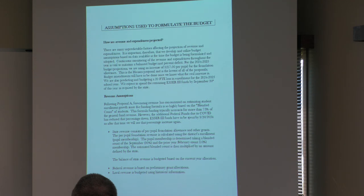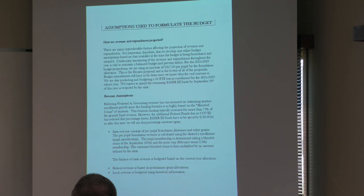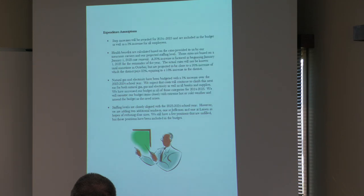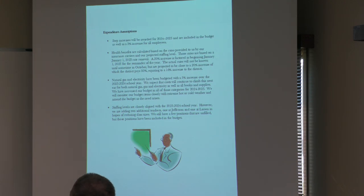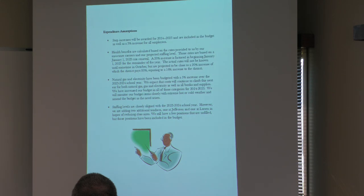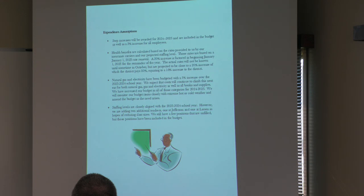Federal revenues in the projection budget are basically the estimates they have provided for all the federal title grants; I'm using their estimates and will increase those with actuals when I do a budget amendment. The local revenue is budgeted based on historical information as well as the taxable values received from the county. For expenditure assumptions, we plan to include step increases and a 3% increase across the board, plus a 20% increase on health insurance.